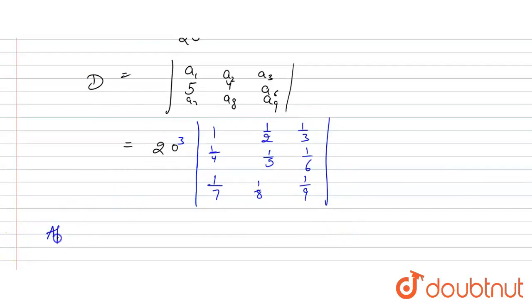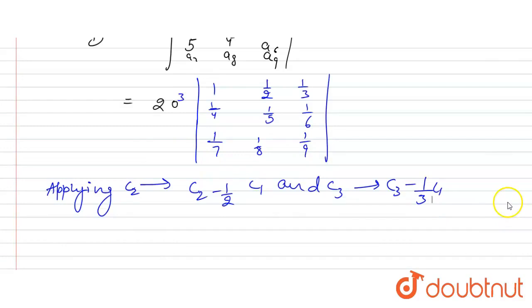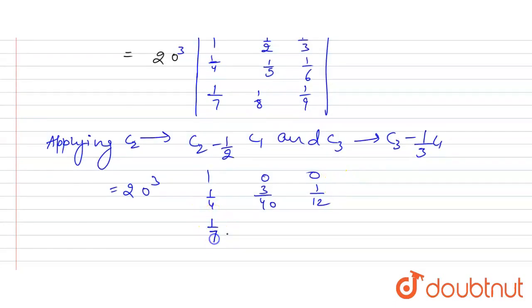Now, what we are going to do is, we are going to apply column 2nd minus 1 by 2 column 1st and in the column 3rd we will do column 3rd minus 1 by 3 column 1st. So from that, what we will get here is 20 cube and 1, 0, 0, 1 by 4, 3 by 40, 1 by 12, 1 by 7, 3 by 56 and 4 by 63. This is what we will get after applying this in the column.